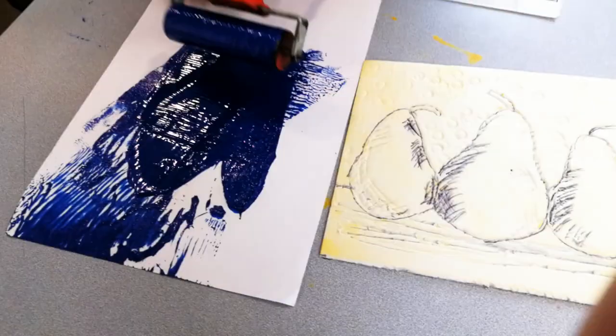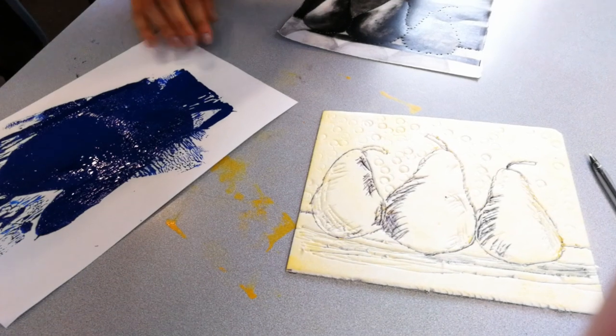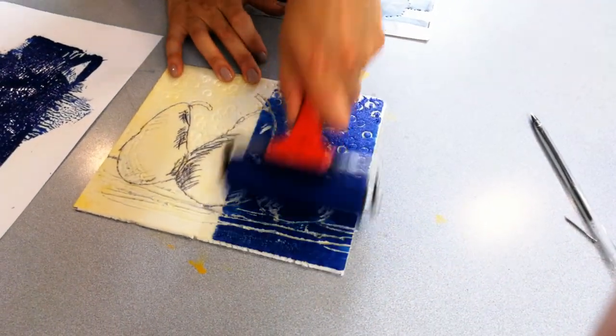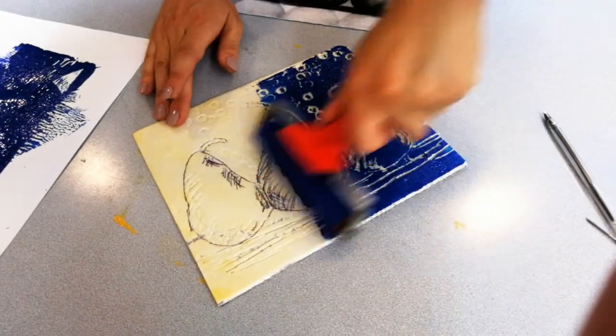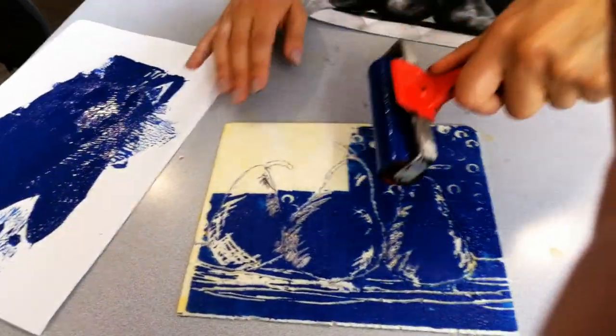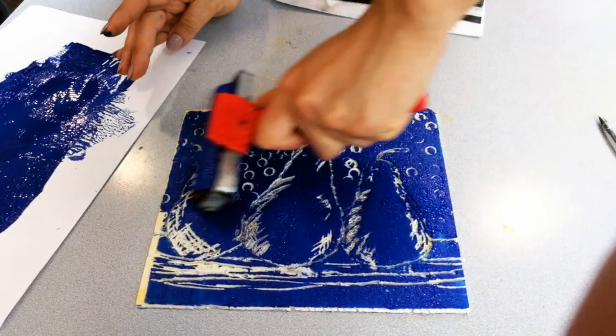Then grab your second color. Make sure you've got it evenly on your roller. So you can see all the areas that are now standing out.